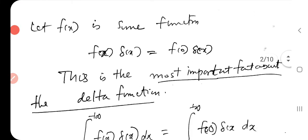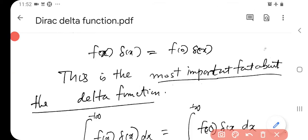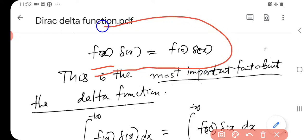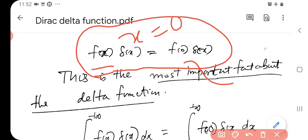Now we discuss a very important fact about the Dirac Delta function. Suppose f(x) is any function. If you take the product f(x) times Delta(x), you will get f(0) times Delta(x). This is the most important fact about the Delta function — because Delta(x) is zero everywhere except at x equal to 0, when taking the product we only need to consider x equal to 0, so f(x) is replaced by f(0).